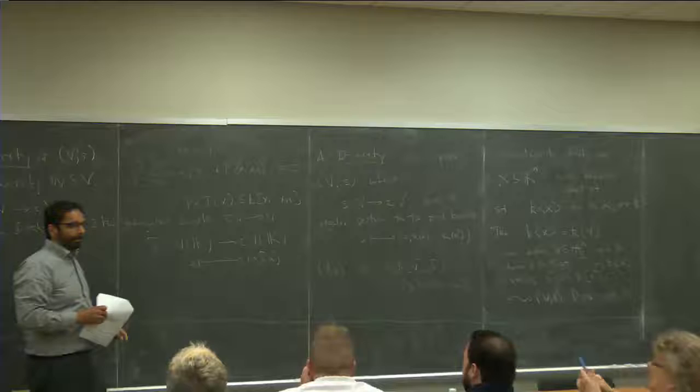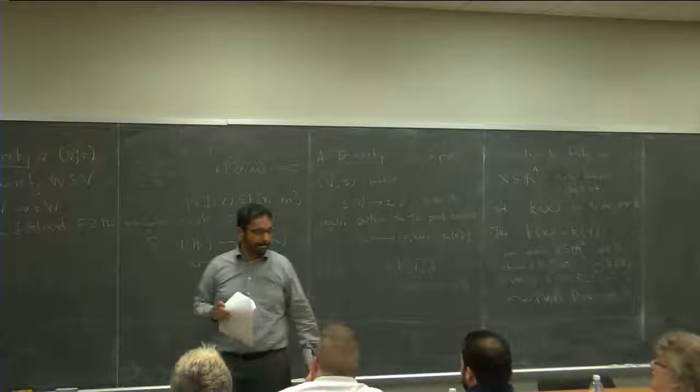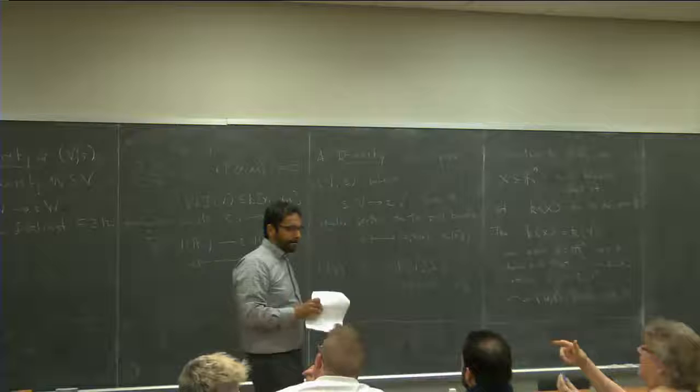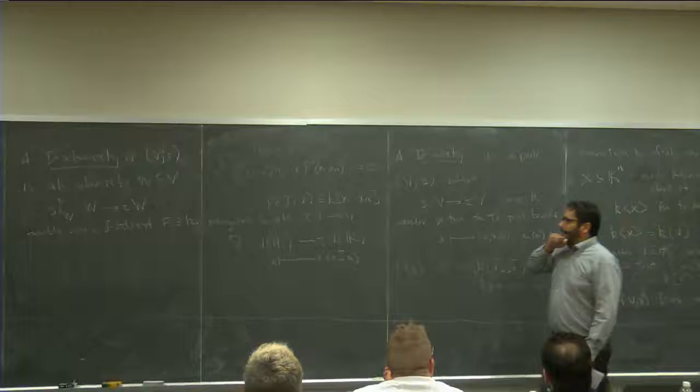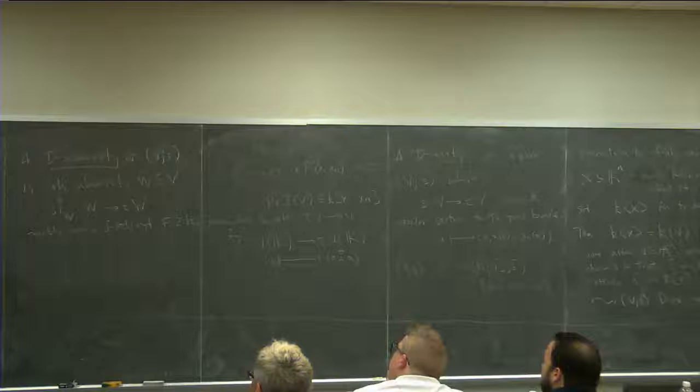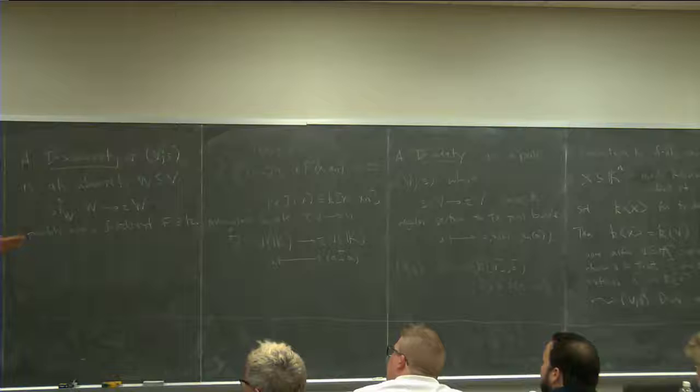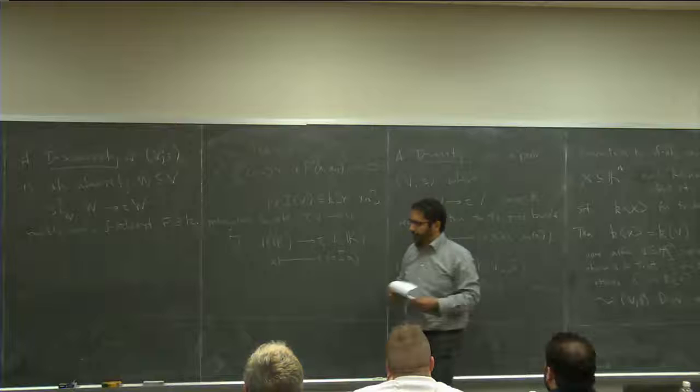The prolongation definition doesn't really depend on the field of definition; it commutes well with base change. If V is the D-variety associated with an irreducible Kolchin closed set, the Kolchin closed subsets of this correspond to the D-subvarieties of V,S. It captures the Kolchin closed subsets — it's a way of studying the Kolchin closed subsets.